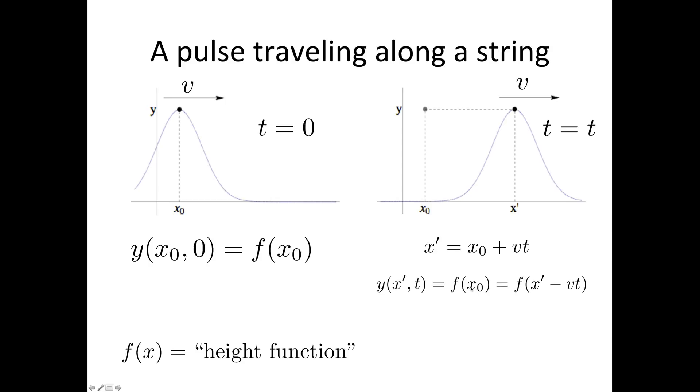Now we're going to do a little mathematical trick. x₀ from this expression here is equal to x prime minus vt. So we're replacing this x₀ with x minus vt. So this is important.